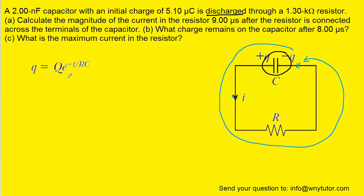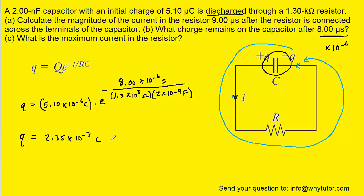Now for part B, we just return to the discharging capacitor equation, and we simply plug in a new time value of eight microseconds. Again, we'll convert that to seconds by multiplying by 10 to the minus 6. Otherwise, the initial charge on the capacitor is the same, and the resistance and capacitance are also the same. When you plug all those values in their standard form into the equation, you should get approximately 2.35 times 10 to the minus 7 coulombs. If you need to convert that back into microcoulombs, we can say that one coulomb is 10 to the positive 6 microcoulombs, which gives us a value of 0.235 microcoulombs. That's the correct answer to part B.